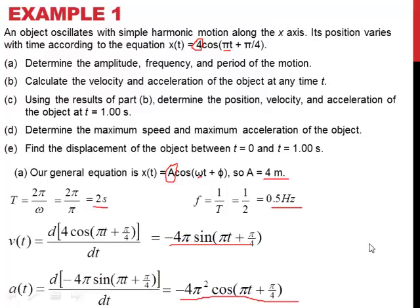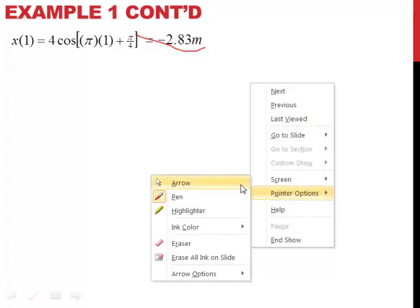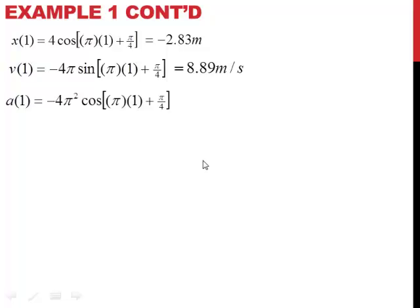I'm going to do parts c through e on the next slide. For part c, we want to find the position, velocity, and acceleration at t equals 1. Plugging t equals 1 into each function: the position is negative 2.83 meters, the velocity is 8.89 meters per second, and the acceleration is 27.92 meters per second squared. These three numbers are our answers to part c.